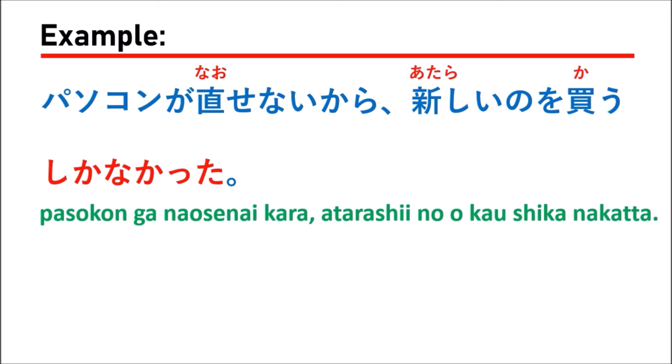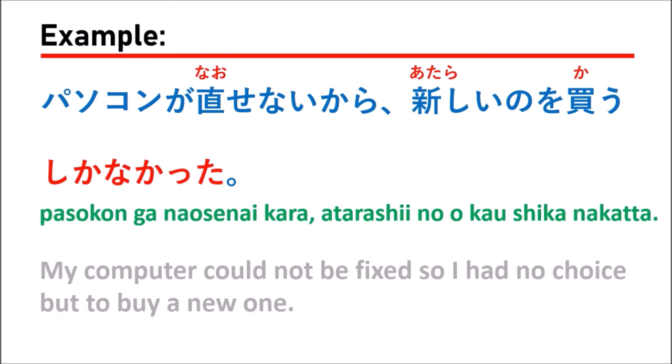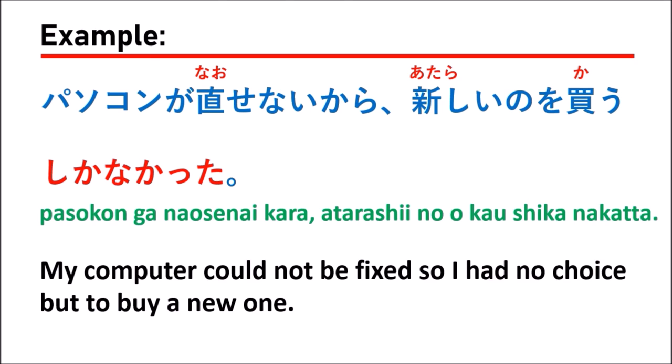The third example is: パソコンが直せないから新しいのを買うしかなかった (Pasokon ga naosenai kara atarashii no wo kau shikanakatta). That means: my computer could not be fixed, so I had no choice but to buy a new one. This uses しかなかった because it is past tense — you had to buy a new one.